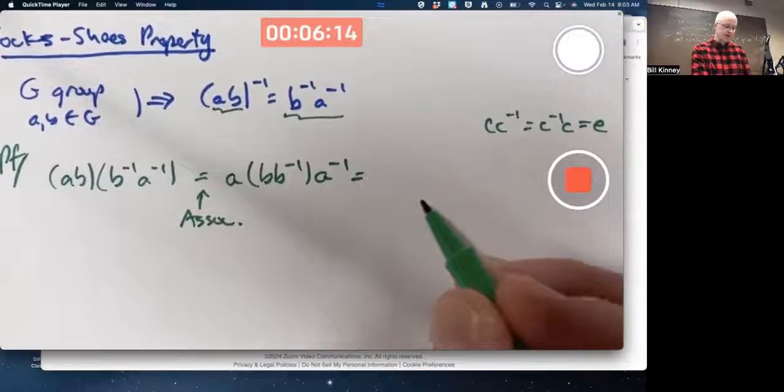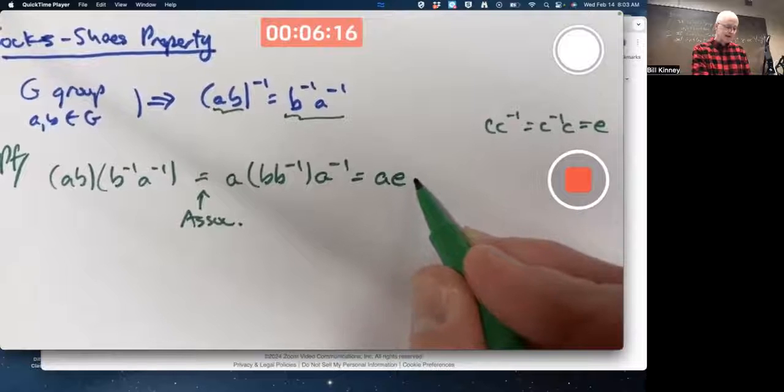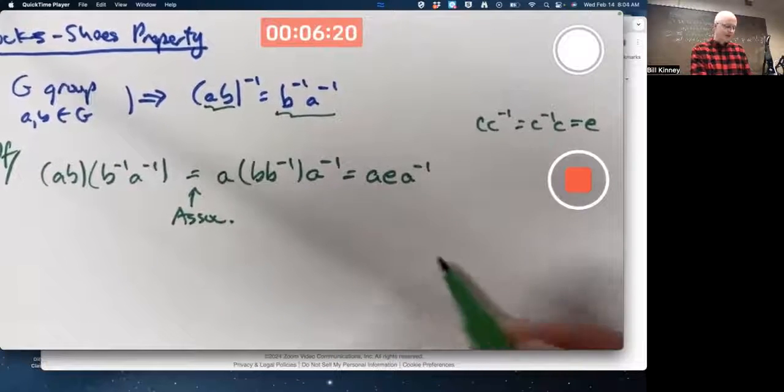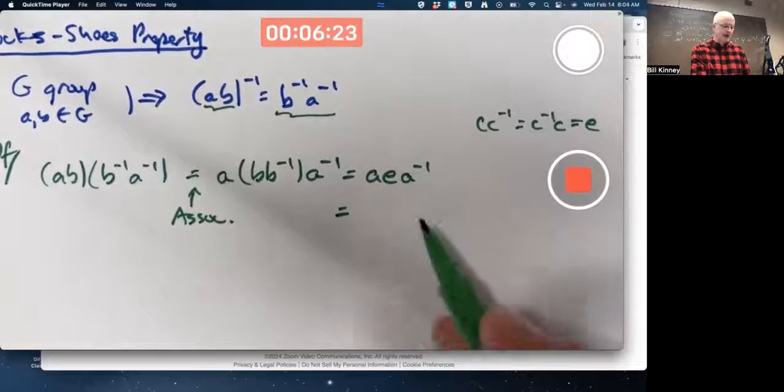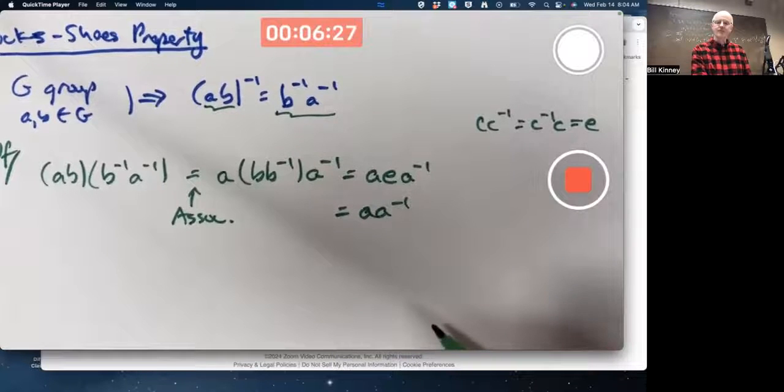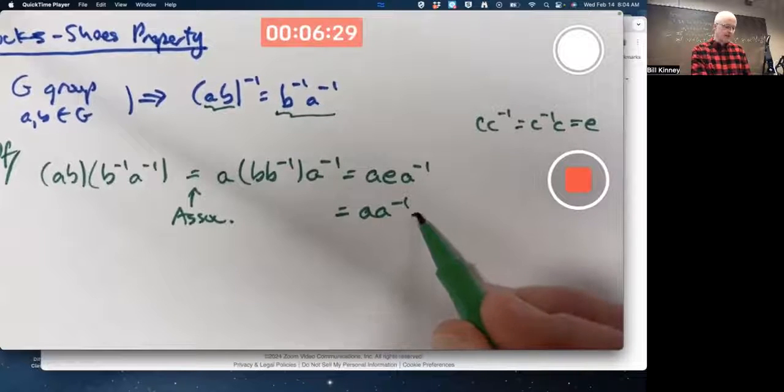Then you know B inverse is the inverse of B. I can write that. It would be good to show here at the beginning one step of saying, okay, A times E is A, before we write A times A inverse is E.